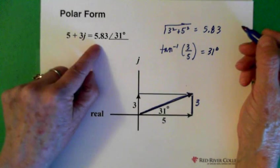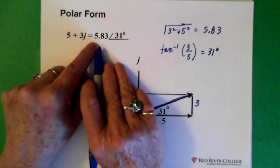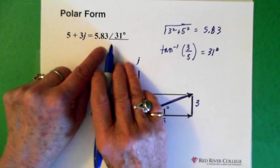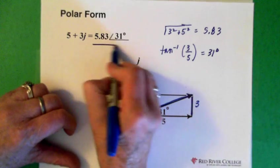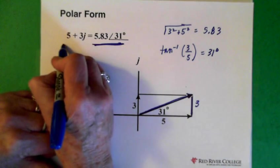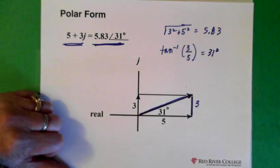And this is how it's written. So, there's the hypotenuse. And there's the angle. So, that's polar form. This one right here. Polar form for a complex number. And this is rectangular form for a complex number.